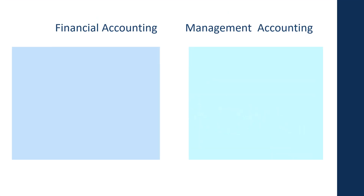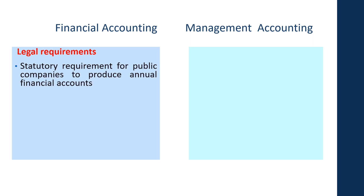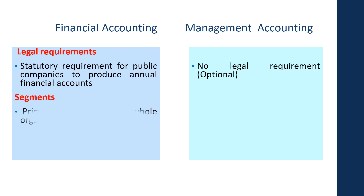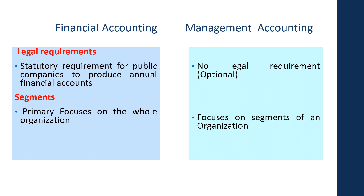Now let's look at the next set of differences. The first one is the legal requirement. There is a statutory requirement for public companies to produce annual financial accounts. When it comes to management accounting, there is no legal requirement — it's optional to prepare management accounts. The next one is segments: in financial accounting, the primary focus is on the whole organization, but in management accounting we can focus separately on each segment of the organization.